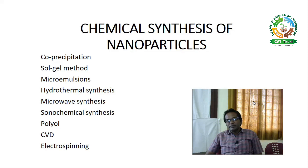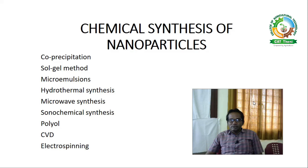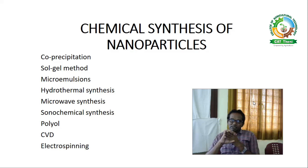Digestive ripening is inversely proportional to Ostwald ripening. Smaller particles are formed at the expense of larger particles — that is what is dealt with in digestive ripening. So these two important steps — first, nucleation, and second, Ostwald and digestive ripening — are the two key steps available in the chemical synthesis of nanoparticles.